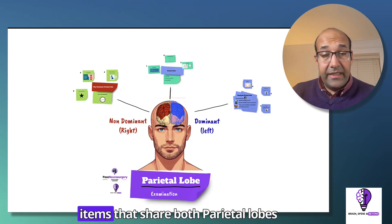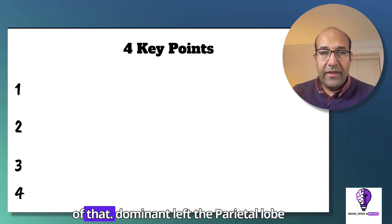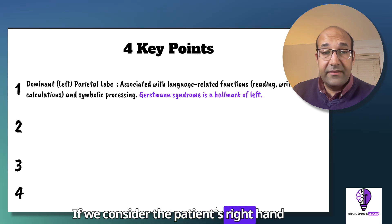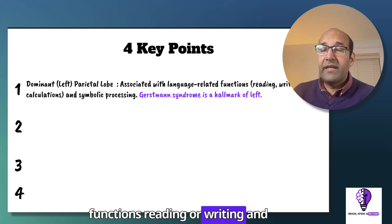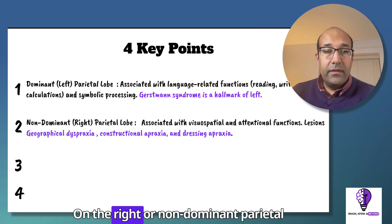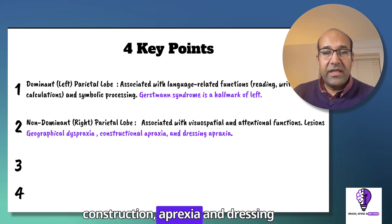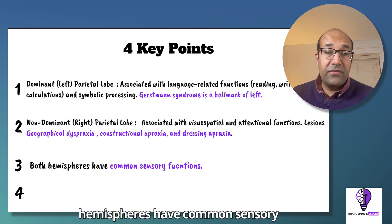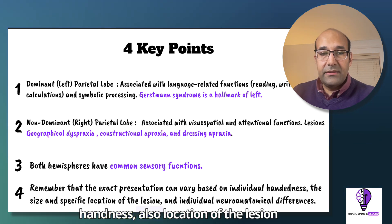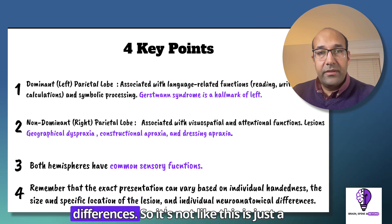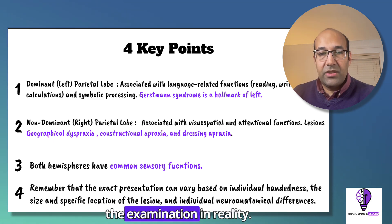To summarize: we discussed general items shared by both parietal lobes, plus dominant and non-dominant specific features. The dominant left parietal lobe — assuming a right-handed patient — has the hallmark of Gerstmann syndrome and language-related functions such as reading, writing, and calculation. The non-dominant parietal lobe involves visuospatial and attention functions, including geographical dyspraxia, construction apraxia, and dressing apraxia. Remember that both hemispheres share common sensory functions, and the exact presentation depends on individual handedness, lesion location, and anatomical differences.